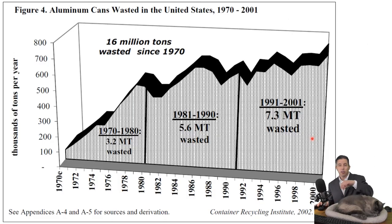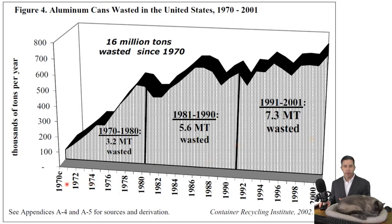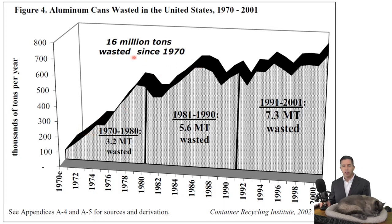Because it takes a lot of electricity to make cans, we'd like to recycle as many as possible. And it turns out, as a country, we're really bad at doing this. Here's a graph published in 2002 showing thousands of tons per year of aluminum cans thrown away in the United States. There weren't really too many aluminum cans before 1970, and as time went on and aluminum cans became more popular, we just threw more and more of them away. They calculated that from 1970 to 2001, 16 million tons of aluminum were simply thrown away.